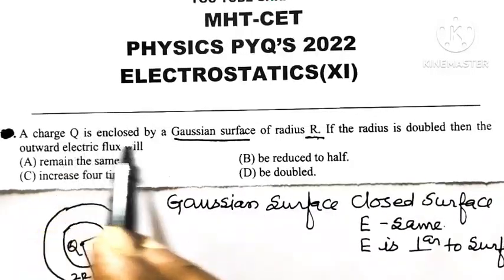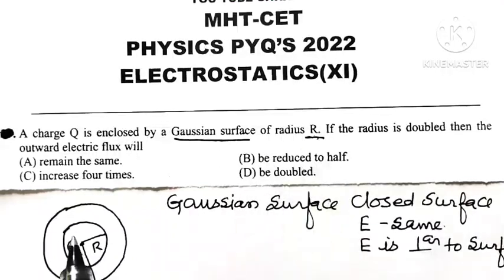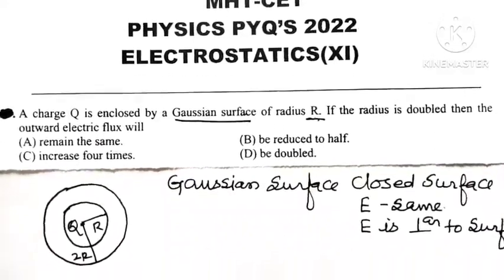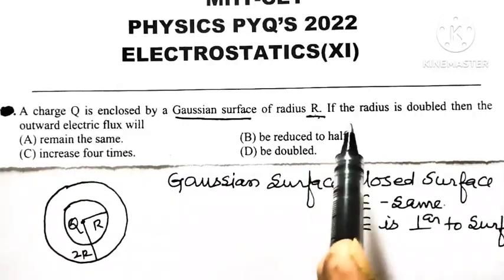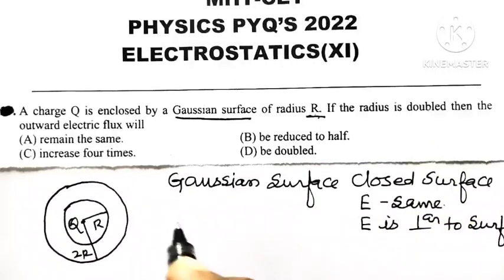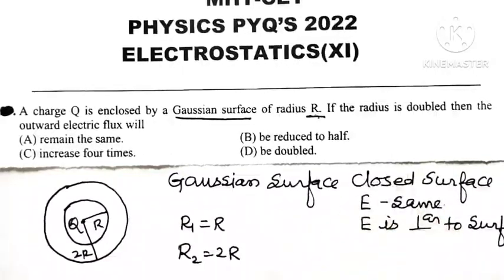Then that surface is a Gaussian surface. So here, charge Q is enclosed by a Gaussian surface of radius R, meaning the Gaussian surface is a sphere of radius R. Now, if the radius is doubled, R1 is equal to R and R2 is equal to 2R.